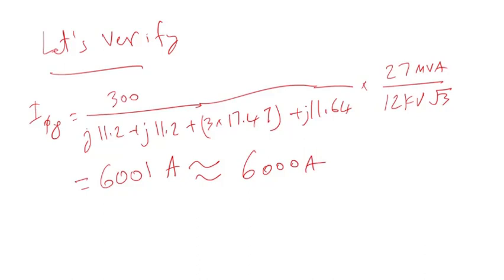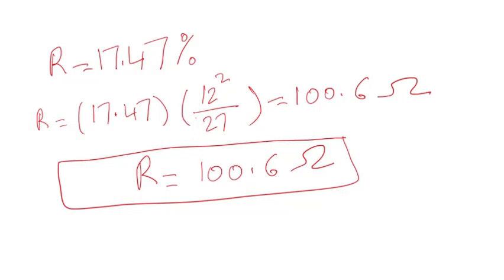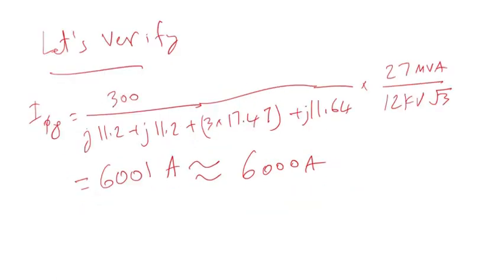So indeed, a resistor of 100.6 ohms connected to the neutral would limit the fault current to 6,000 amps. That was it for this video. In the next video, I'll talk about effective grounding — when you ground the neutral through an impedance, it's no longer solidly grounded, which could jeopardize effective grounding. We'll check for that criterion in the next video. Thank you and have a great day.